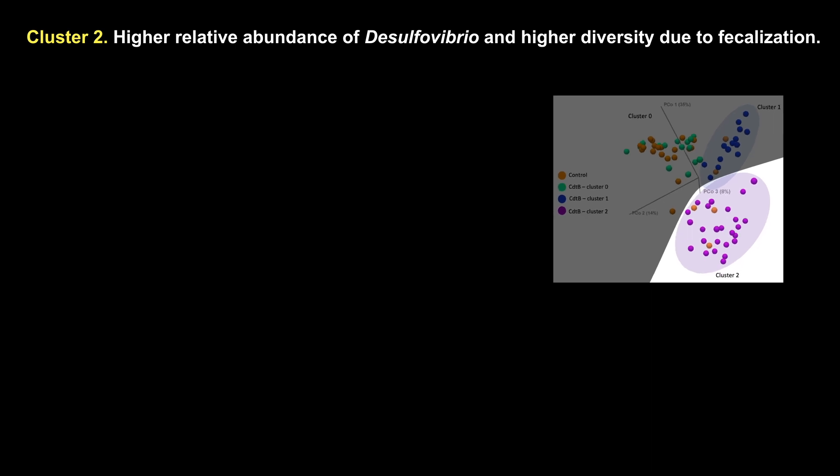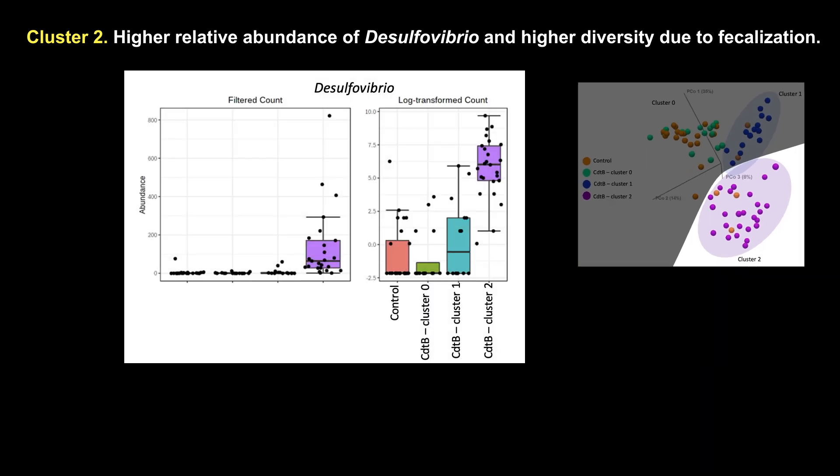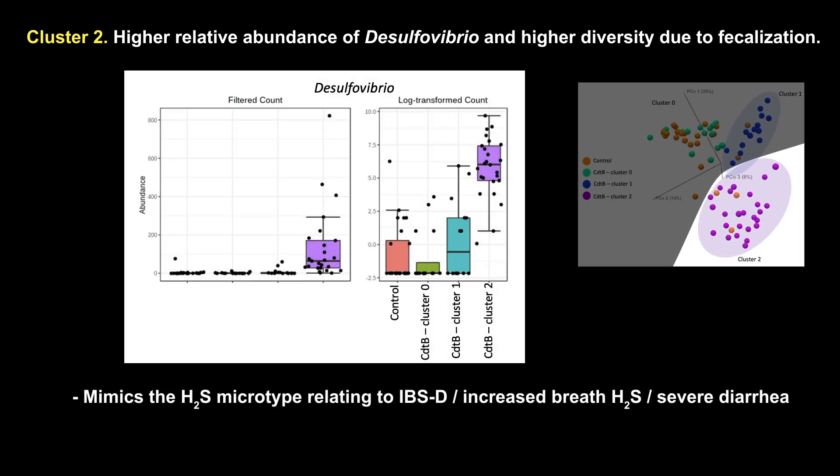Cluster 2 had higher relative abundance of Desulfovibrio and higher diversity due to fecalization. This mimics the hydrogen sulfide microtype relating to IBS-D, increased breath hydrogen sulfide, and severe diarrhea, and exhibits microbes normally found in stool.